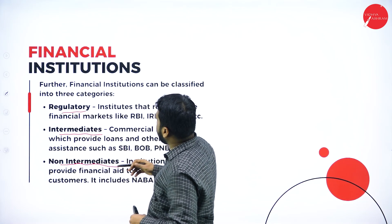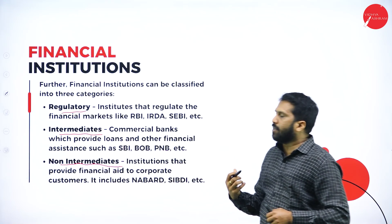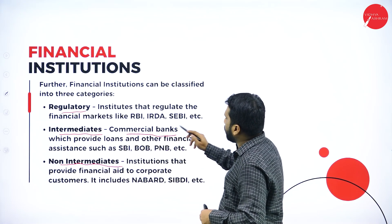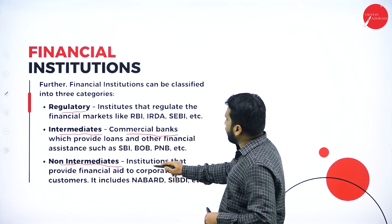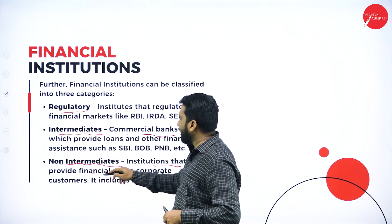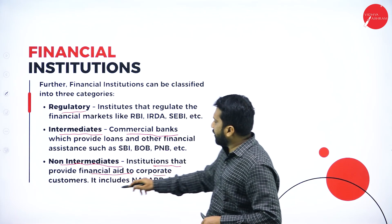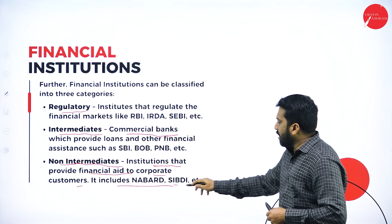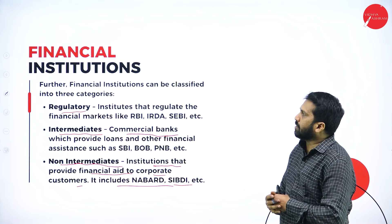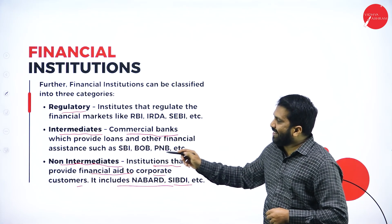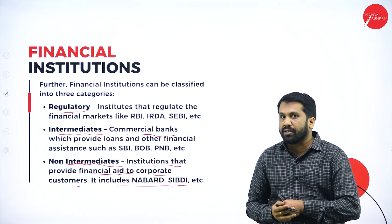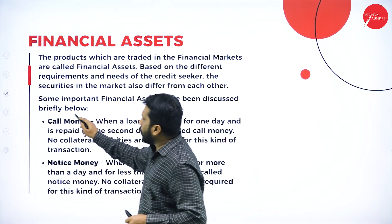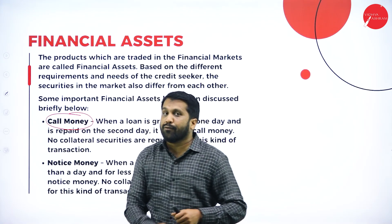Under financial institutions, there are regulators, intermediaries, and non-intermediaries. Intermediaries include all commercial banks. Non-intermediary institutions provide financial aid to corporate customers and include organizations like NABARD and SIBDI. These are the categories that come under financial institutions.